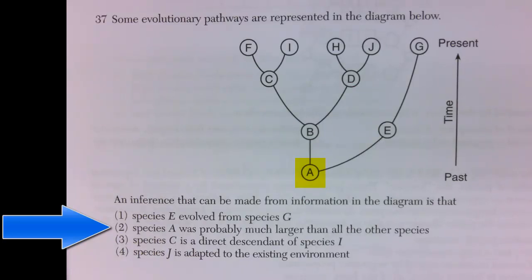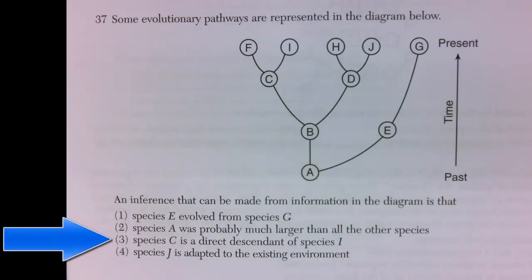Number three states species C is a direct descendant of species I. C is not a direct descendant of I. I can be a direct descendant of C, but C came before I so cannot be a direct descendant of I. So you can eliminate three as a possible answer.